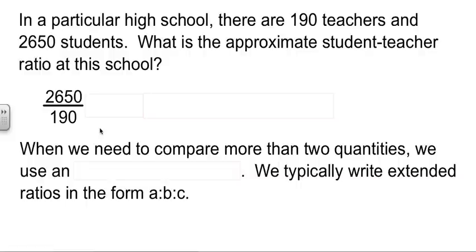Now they're asking for an approximate student to teacher ratio. Typically you would report that as the number of students per one teacher. So I'm going to divide these two numbers out. 13.94 is what I get when I divide.